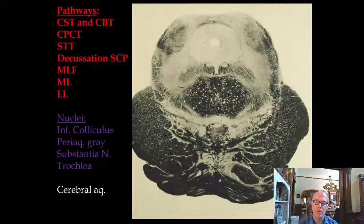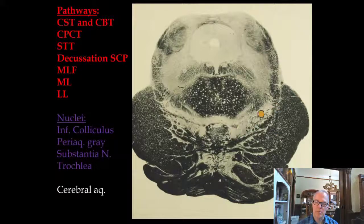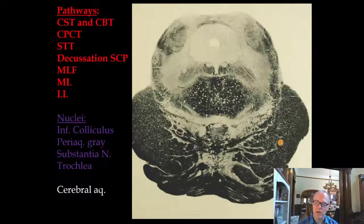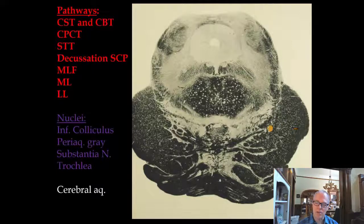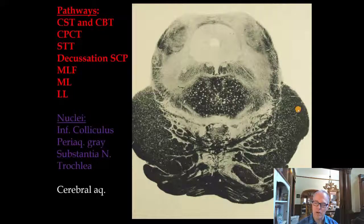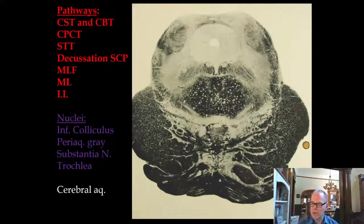Looking at two sections of the midbrain, we can see the cerebral peduncle and the substantia nigra. So far, we've noted that the corticospinal tract travels in the cerebral peduncle, but there are actually three pathways traveling together there. The corticospinal tract and corticobulbar tract travel together in the middle portion, whereas the corticopontocerebellar tract travels out along the periphery — representing communication between the cortex and the cerebellum.